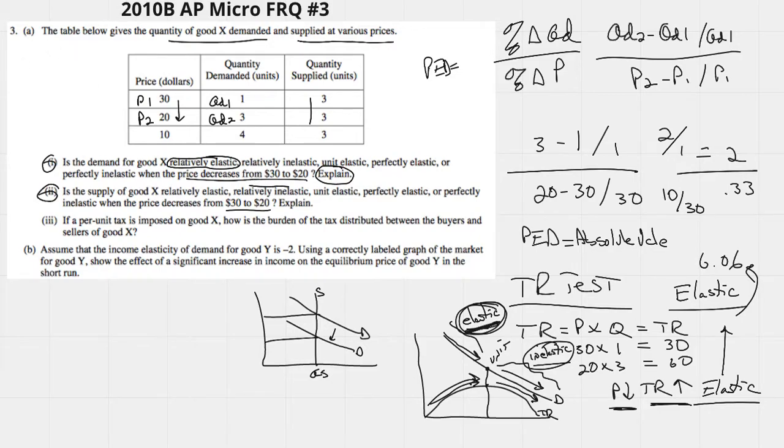And that means it's obviously perfectly inelastic. Perfectly inelastic, straight up and down quantity supplied does not change at all, no matter what happens to the price.